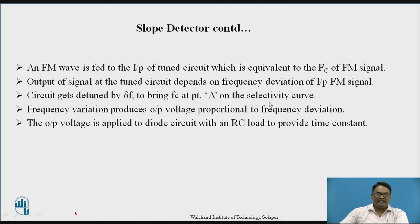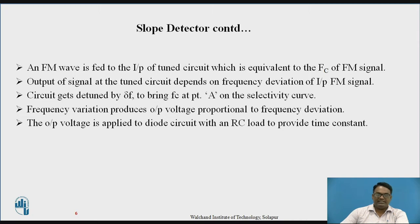The circuit gets detuned at delta-F so that point A is brought back onto the selectivity curve. The selectivity curve response shows that at point A the circuit works very efficiently. The frequency variation produces output voltages which are proportional to the frequency deviation. This output voltage is then applied to the diode circuit with an RC load, where the time constant is maintained by the resistor and capacitor connected at the output side.